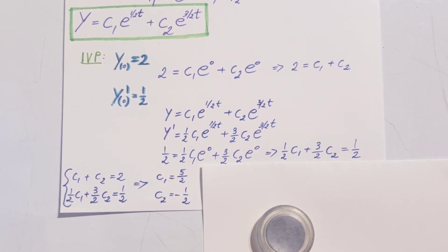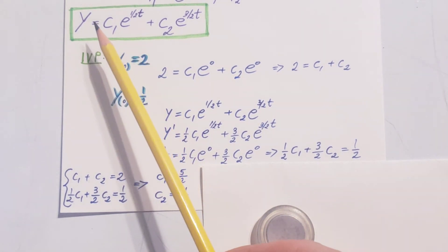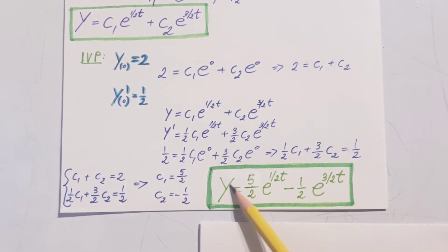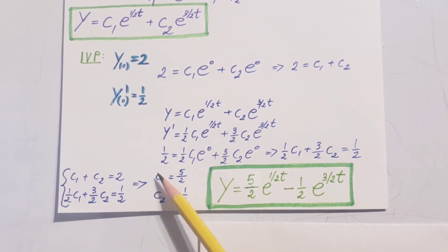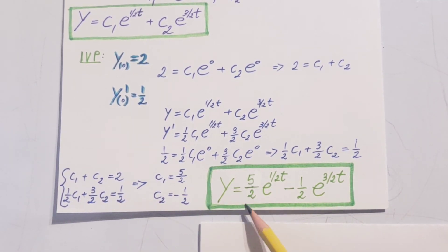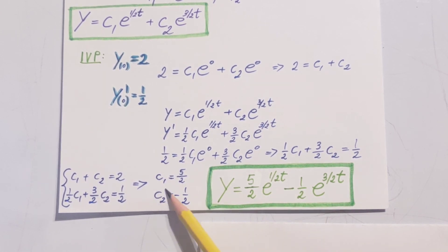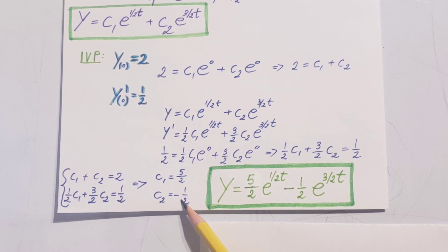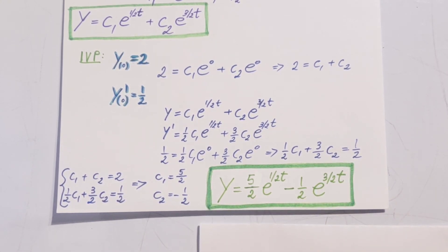Now, we can utilize these and update our solution. y equals, instead of c1, we plug in 5/2, e to 1/2 t, minus, instead of c2, we put negative 1/2, so negative 1/2, e to 3/2 t. And that would be our final answer.